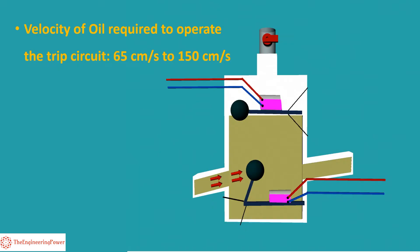In most Buchholz relays, provision is made for adjusting the relay to operate at 65 cm per second, 100 cm per second, and 150 cm per second. Most commonly, these relays are set at 100 cm per second.